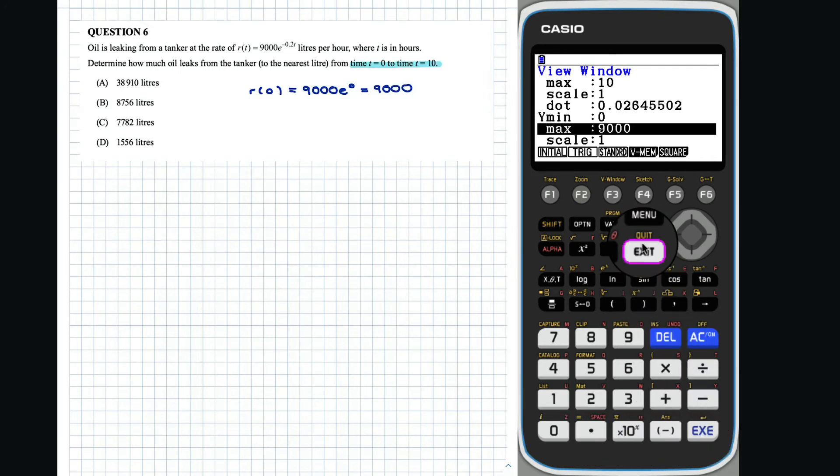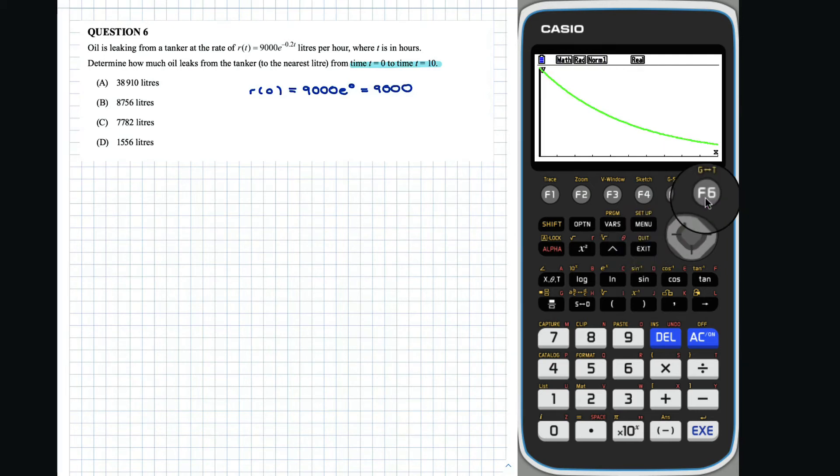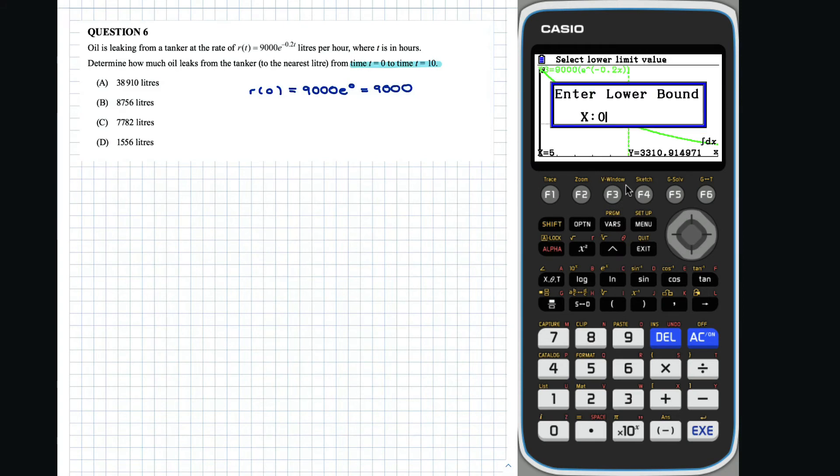Alternatively, you may wish to set the domain and use zoom auto to set your range. We can now integrate from 0 to 10 as follows. The lower bound of 0 and the upper bound of 10.